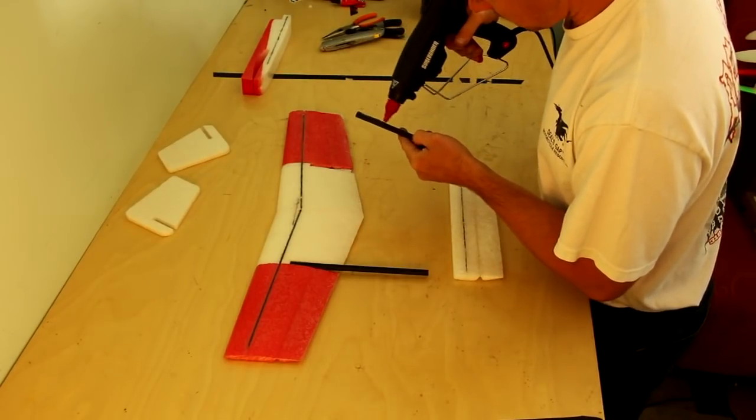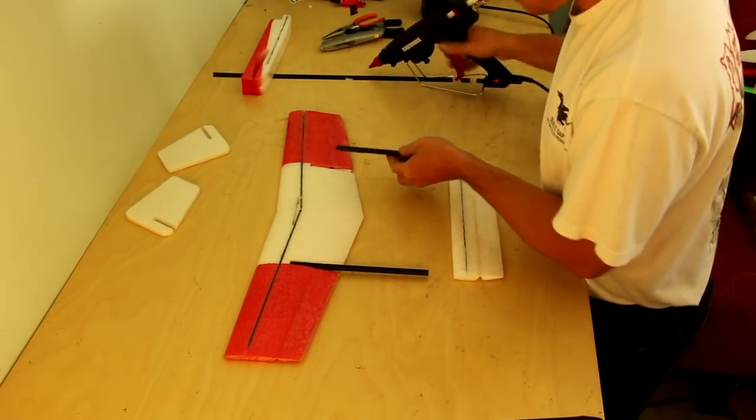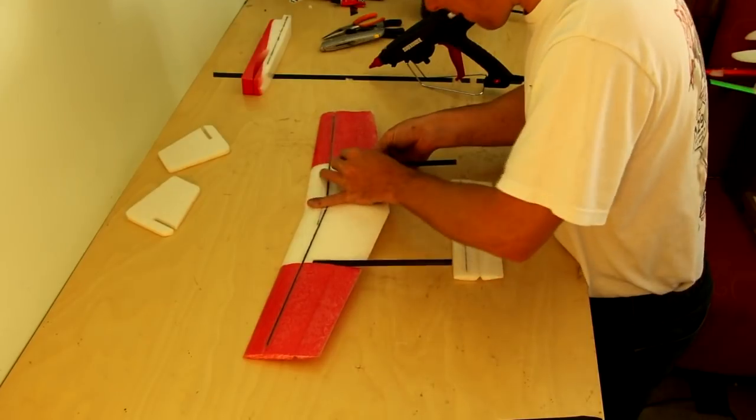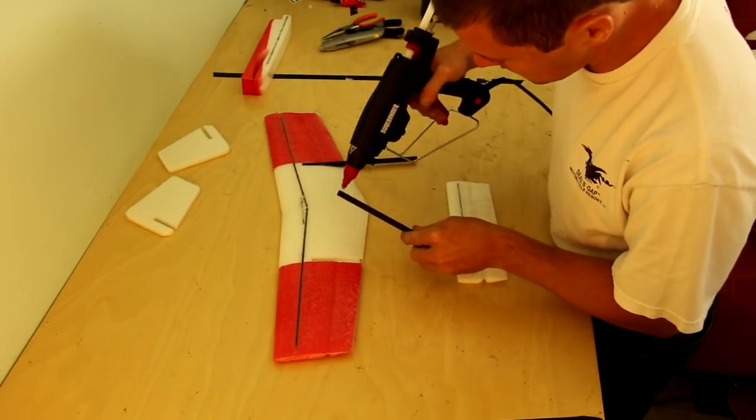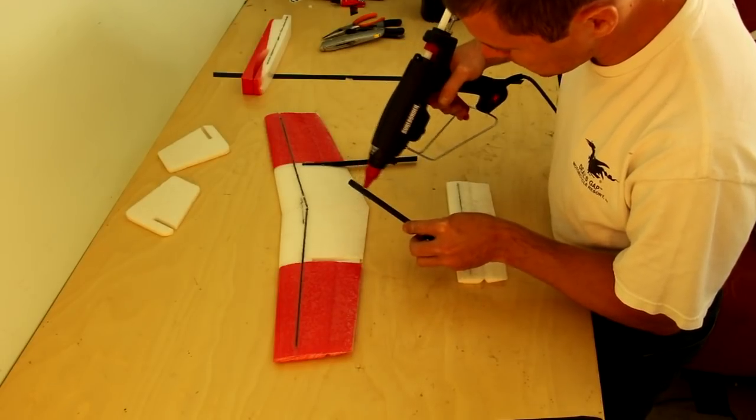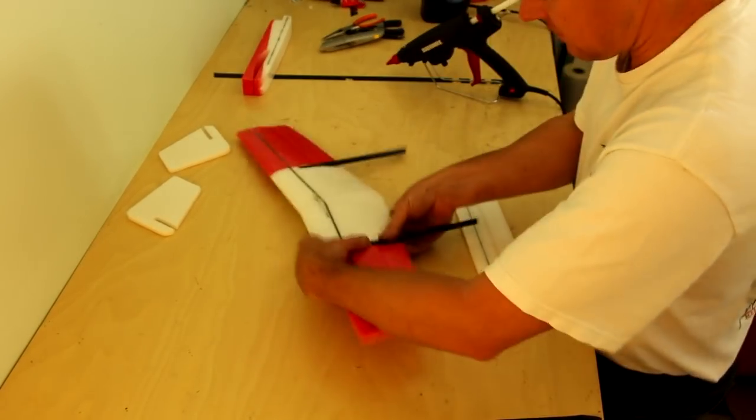Here I'm simply gluing the booms in place with hot glue. Again use whatever glue you want. Do not glue the aileron to the booms but glue all of the other sections in securely. Check to be sure that the booms are straight with the work surface.